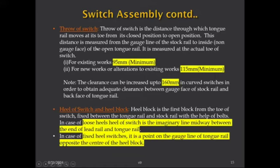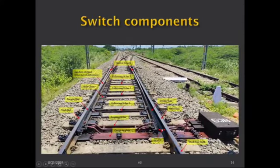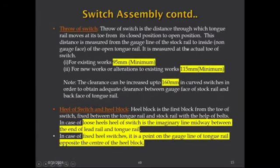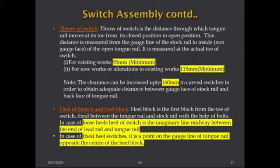The throw of switch, or toe opening, is the distance through which the tongue rail moves at the toe from its closed position to open position. It is measured from the gauge face of the stock rail to the inside (non-gauge face) of the open tongue rail at the actual toe of switch. For existing track, the minimum is 90mm; for new works or alterations, the minimum is 115mm. For curved and thick web switches, it can be increased up to 160mm to obtain adequate clearance between the stock rail and tongue rail.